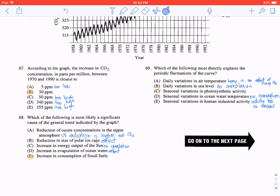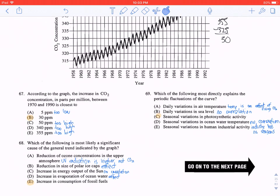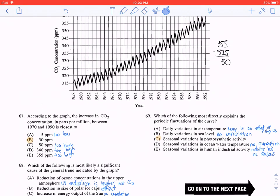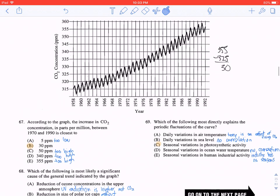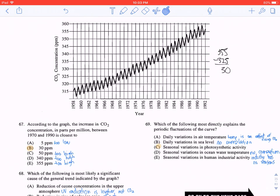Question 67: According to the graph, the increase in CO2 concentration in parts per million between 1970 and 1990 is closest to... In 1970, the CO2 concentration was 325, and in 1990, it was 355. So if you subtract 355 minus 325, the answer is 30 parts per million, B.